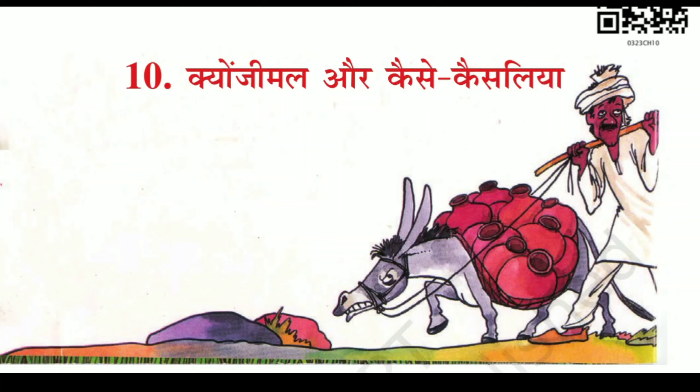Today's topic is Class 3, Chapter 10: 'Kyo Jamal aur Kaise Kya Liya.' They have given two nicknames to two kids because they keep on asking questions. 'Kyo Jamal' means the 'why' person, and 'Kaise Kya Liya' means the 'how' person.